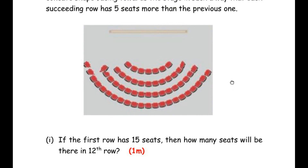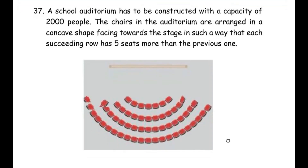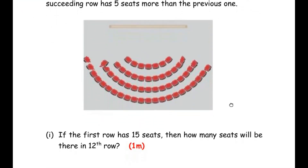Let us understand the question first. Here they have given us a picture of an auditorium and they say that a maximum of 2000 people can accommodate inside this auditorium. The chairs are arranged in rows such that each succeeding row has five more chairs than the previous one. In the picture there are seven chairs in the first row, whereas in the second row there are 12 chairs, which is five more than the previous row, and so on.